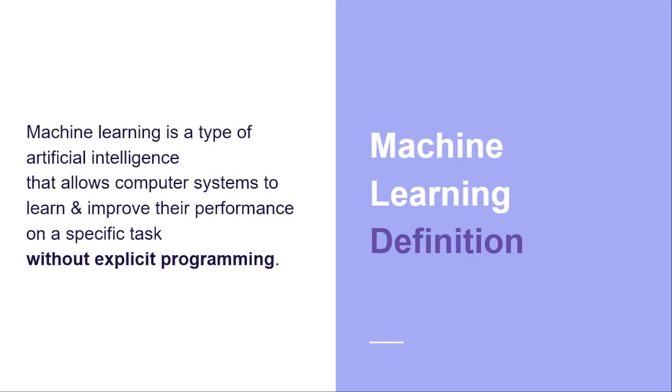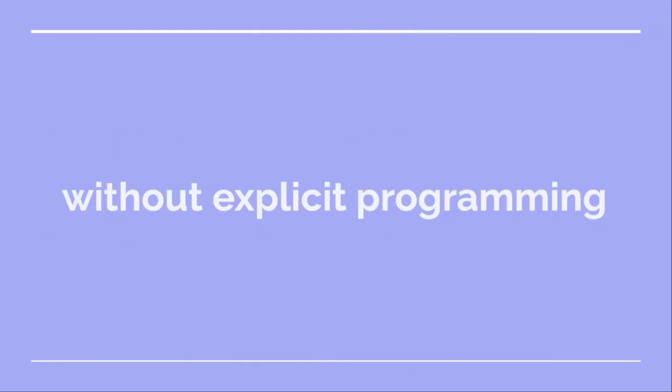The very first thing that we need to talk about is the definition of machine learning. What is it? Machine learning is a type of artificial intelligence, or AI for short, that allows computer systems to learn and improve their performance on a specific task without explicit programming. There are multiple keywords here that are very important, but the most important part, in my opinion, is without explicit programming. So what does it mean?